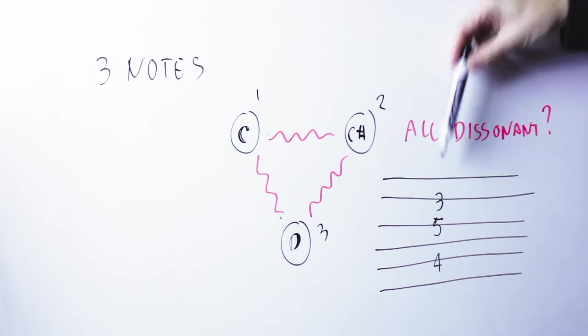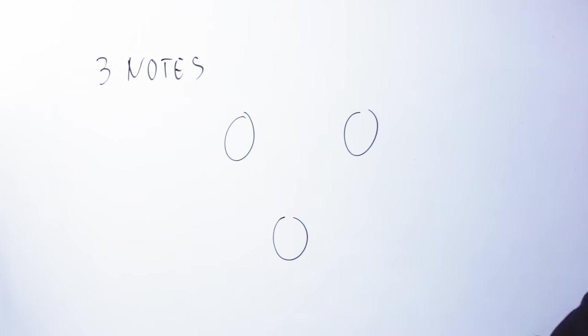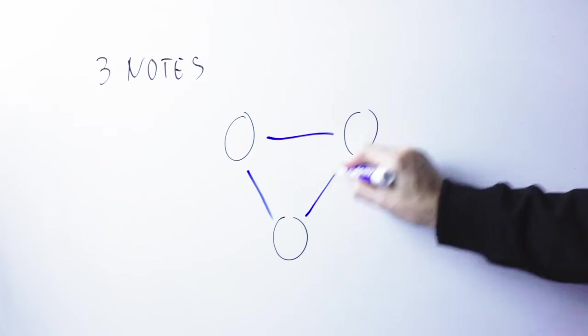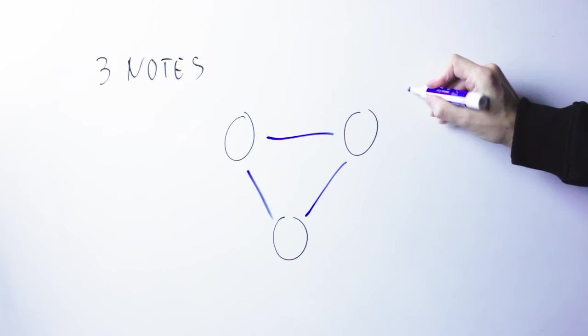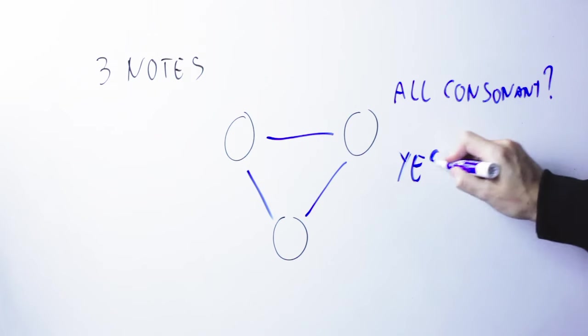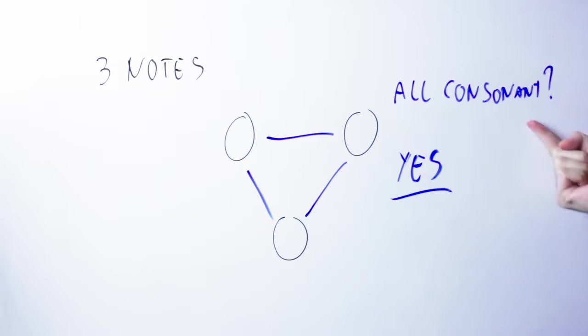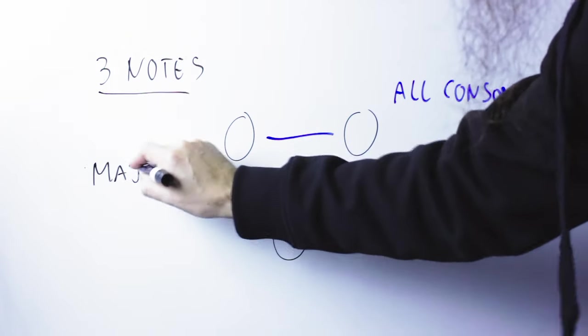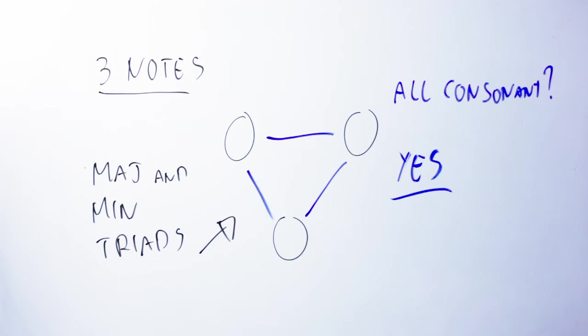Lovely. Can I pick those three notes so that some of those relationships are consonant and some are dissonant? Yes. That's actually what's happening in the majority of the cases. Can I pick those three notes in a way that all those relationships are consonant? Yes. And what turns out is that those groups of three notes in which all the relationships are consonant are major and minor triads and only the major and the minor triads. No other combination of notes has all those three relationships that turn out to be consonant.